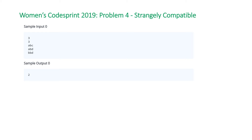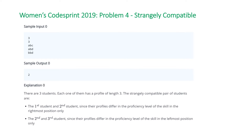HackerRank provides an explanation for why the answer is two. The first and second strings only differ by the last character — 'c' vs 'd' — all other characters are the same. The second and third strings only differ by the first character — 'a' vs 'b'. The pair of string one and string three differ by two characters, so we end up with exactly two pairs of strings that differ by one character.